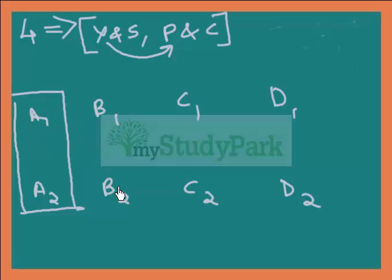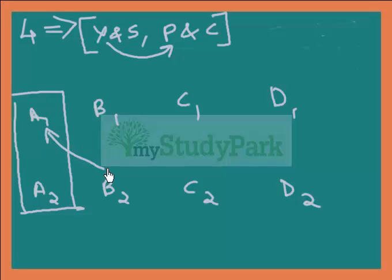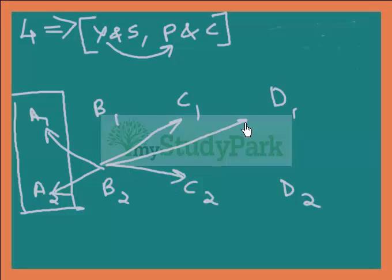If A1 asks B2 how many handshakes they got, what is the maximum number B2 could have? B2 would have shaken hands with A1, A2, C1, C2, D1, and D2 — that is 6 handshakes. B2 cannot shake hands with B1 because B1 is B2's spouse. So B2 got a maximum of 6 handshakes.